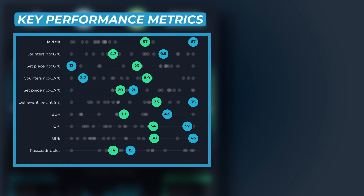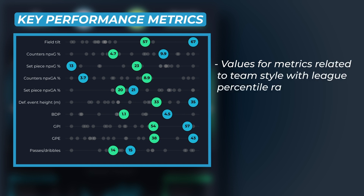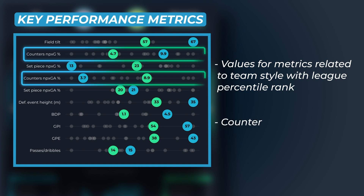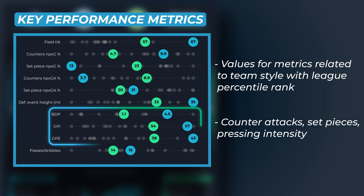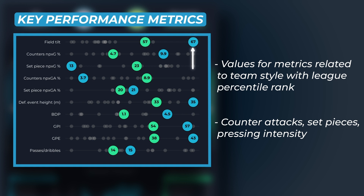In the key performance metrics, we highlight both teams' averages and percentile rank for values specifically related to team style, including metrics related to counterattacks, set pieces, and pressing intensity. The passes and dribbles value is a simple count ratio, limited to the opponent's half, that gives us an understanding of how much a team relies on individual plays or long passing chains. The value in the circle highlights the team's average for each metric, with values further to the right being in the highest percentile rank for the league, and further to the left being in the lowest percentile rank. The grey dots indicate the other teams in the league, giving you a visual understanding of where the majority of teams sit.